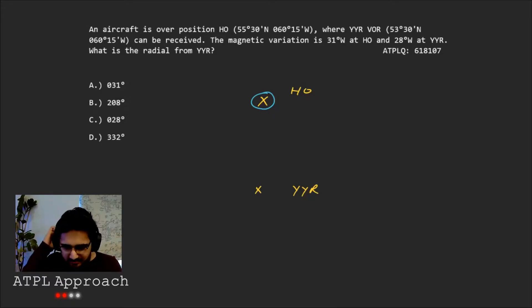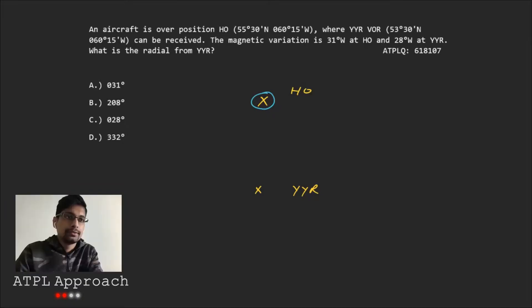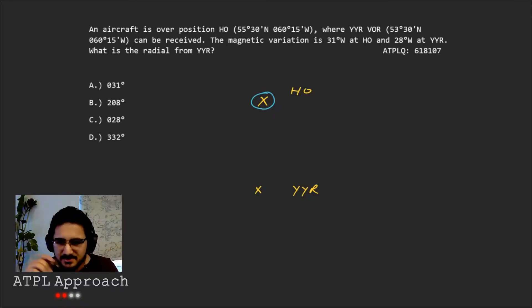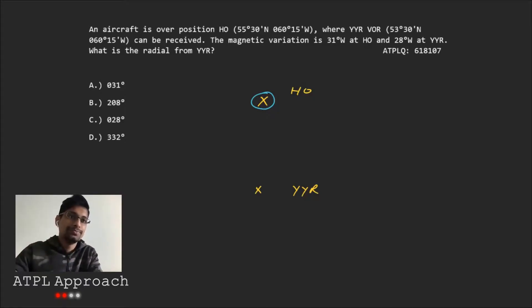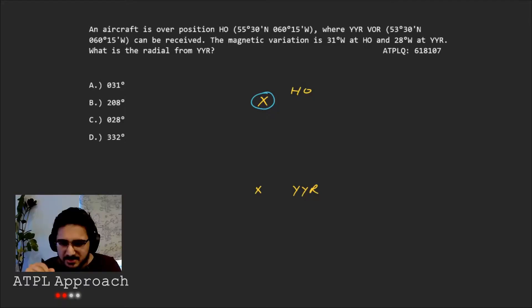And now we need to figure out how do we apply the magnetic variation. Right. So the variation's at the VOR. Yeah. And that one's 28 west. Oh, sorry. So yeah, that's the key point really, isn't it? Is that from this question, you don't do the variation where you are. You do it where the VOR is.